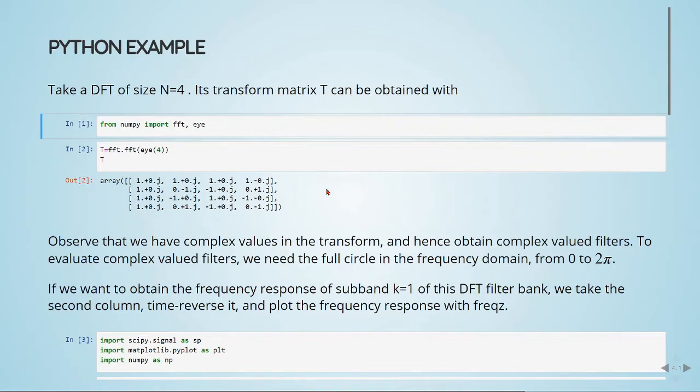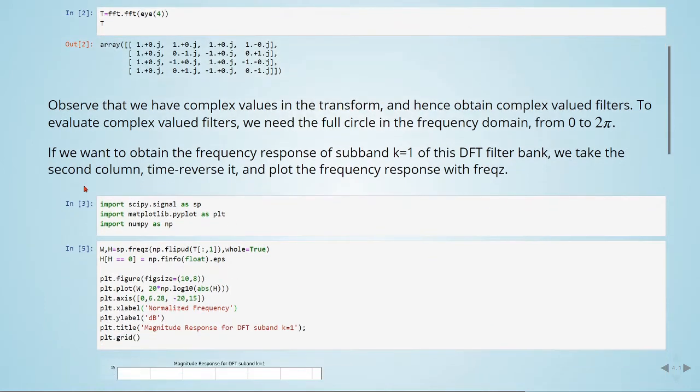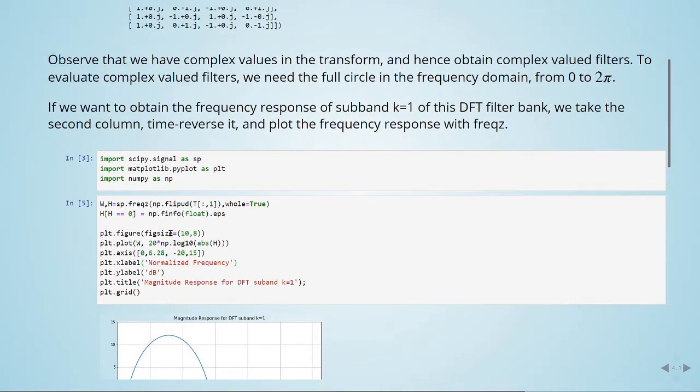If we want to obtain the frequency response of sub-band k equals 1 of this DFT filter bank, we take the second column, time reverse it, and then plot the frequency response. Here we are importing scipy signal, matplotlib to plot, and numpy. We are computing the frequency response of sub-band k equals 1.